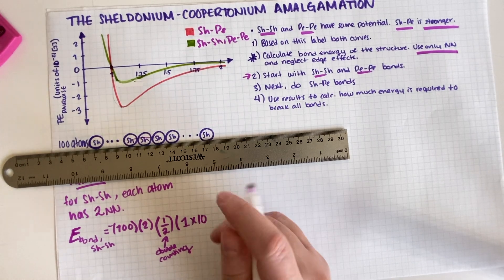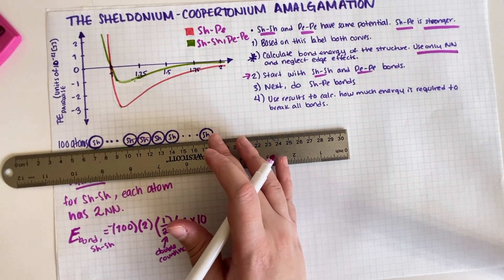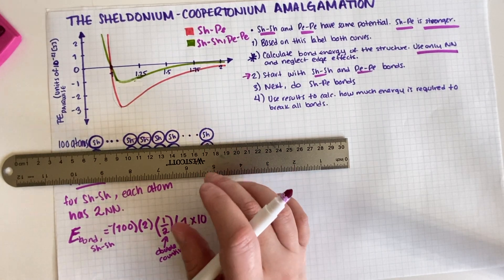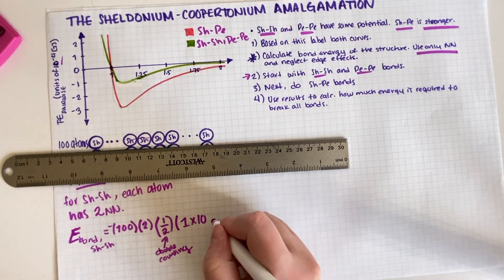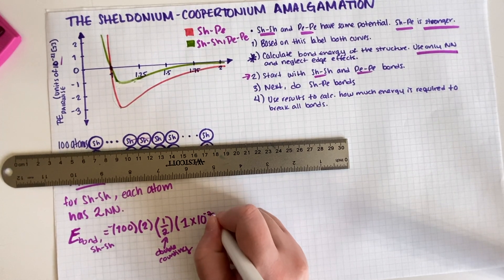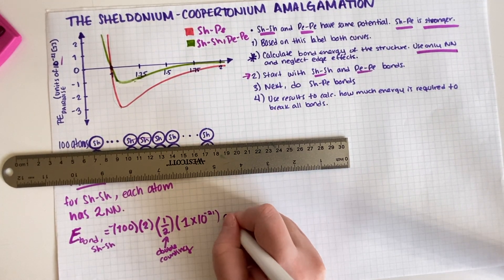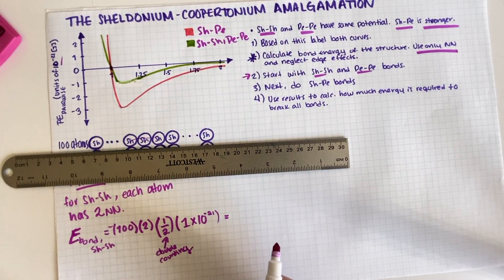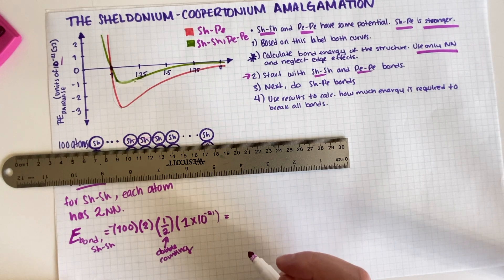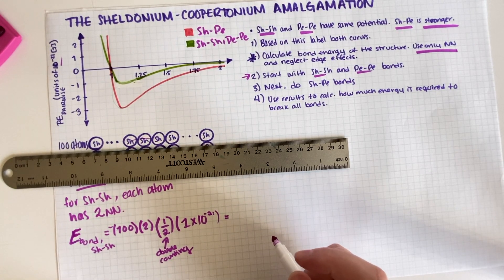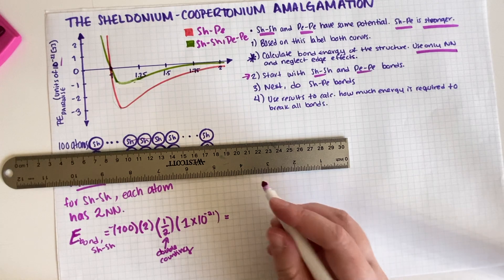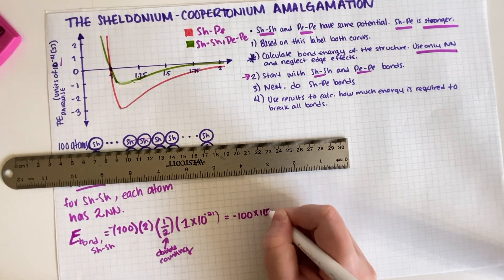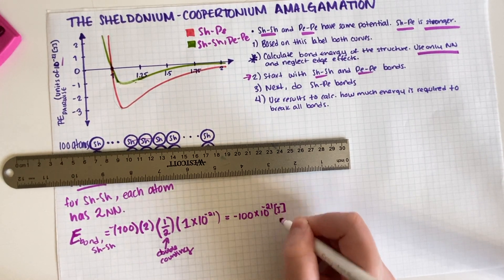Then we have to do one half—this is double counting. This accounts for double counting right here. And then just the amount of energy of each Sheldonium-Sheldonium, so this will be the green graph, so negative one times 10 to the negative 21. So this is equal to negative 100 times 10 to the negative 21 joules.